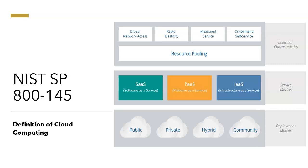The next deployment model is community cloud. In this, the cloud infrastructure is owned and shared by several organizations that support a specific community with shared concerns — for example, a particular mission, a security requirement, policy, or compliance consideration. It may be managed by the organizations or by a third party, and may be located on premises or off premises.